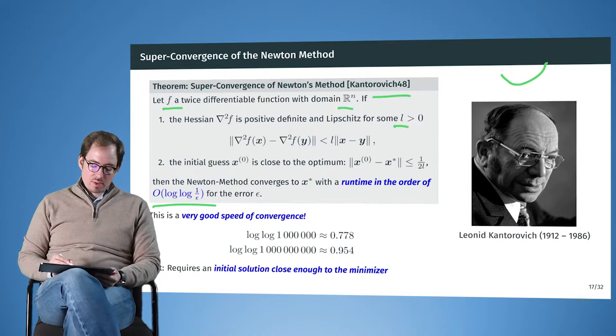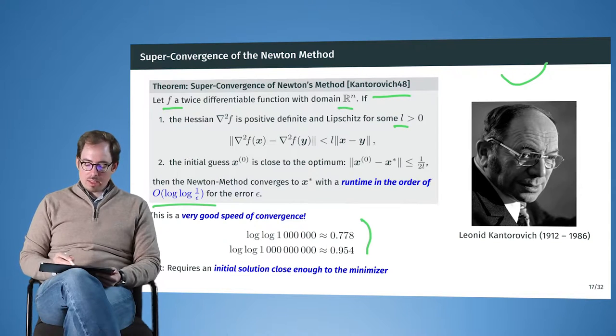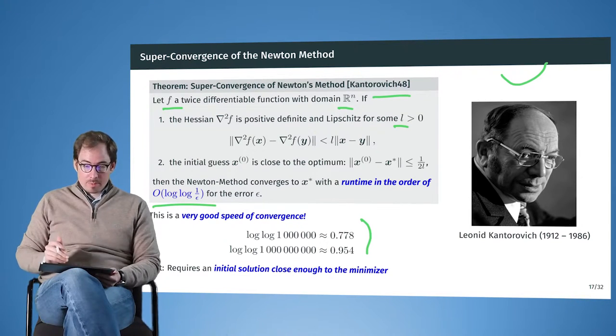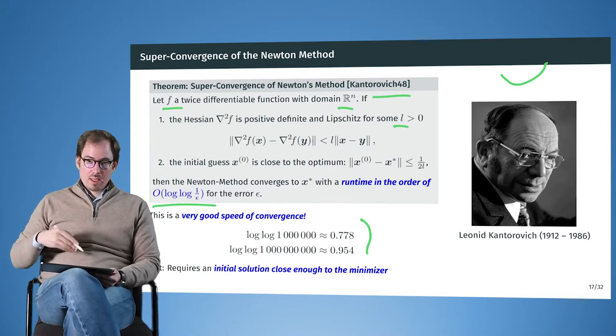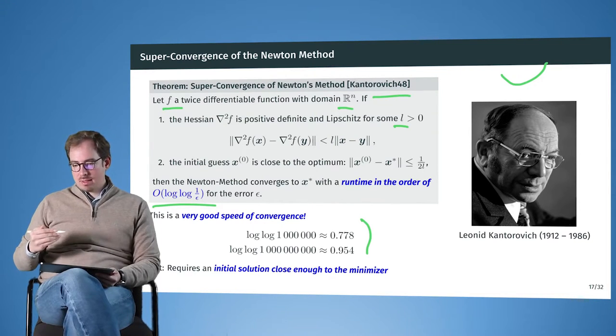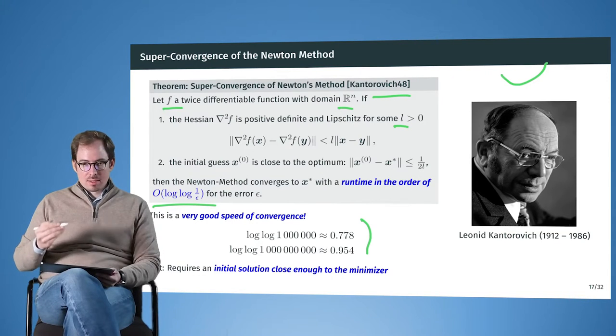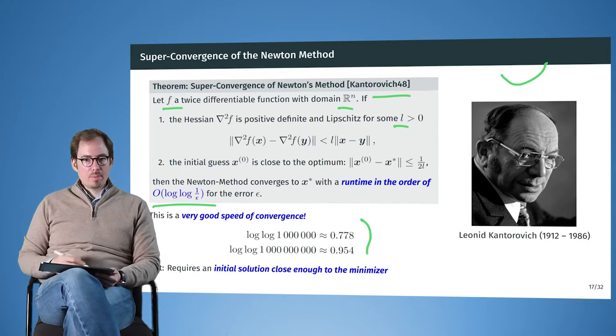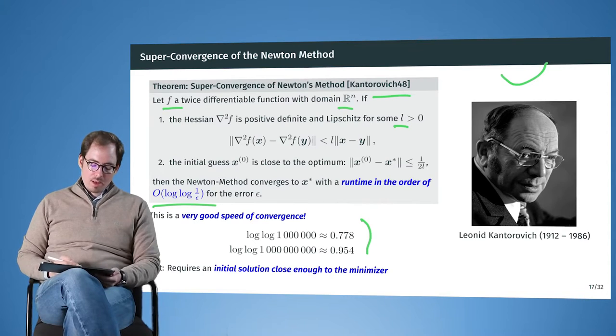So due to this super convergence, if our initial location is close enough to the minimizer, then by only two or three iterations of the Newton method, we will be as precise as we can still represent the solution in our floating point numbers on our computer.